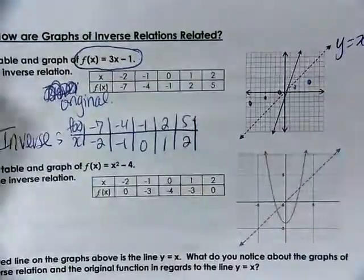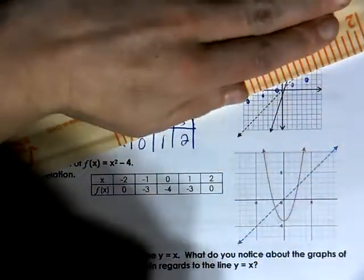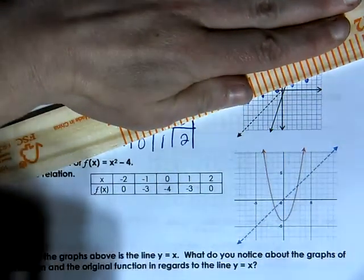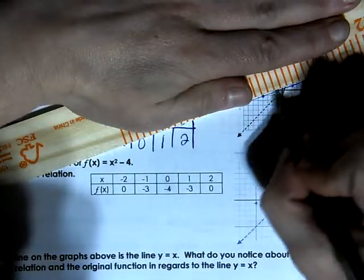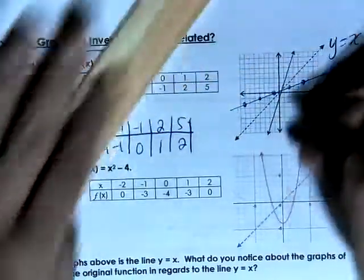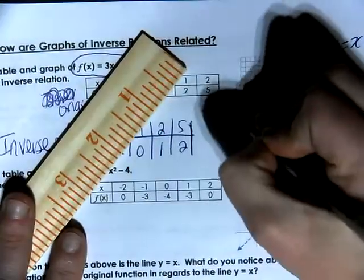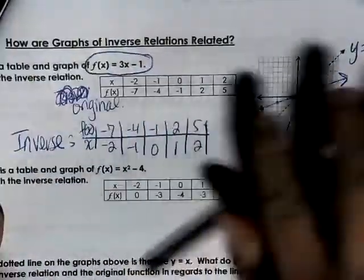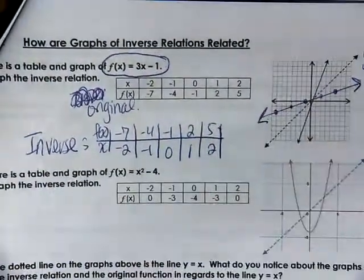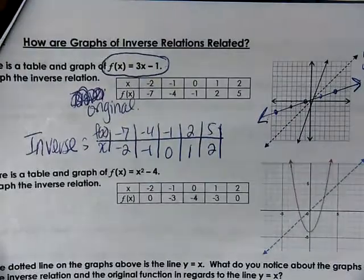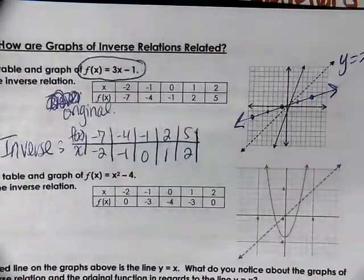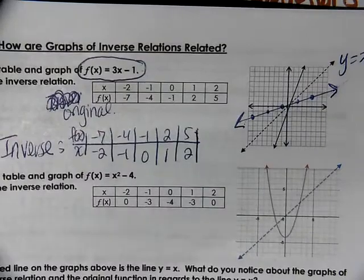This is where you need your straight edge. Now I want you to look at our graph and ask: how are the two graphs related? We have the dashed line y equals x — what do you notice about the pictures? Keep that in mind as we move to the next example.